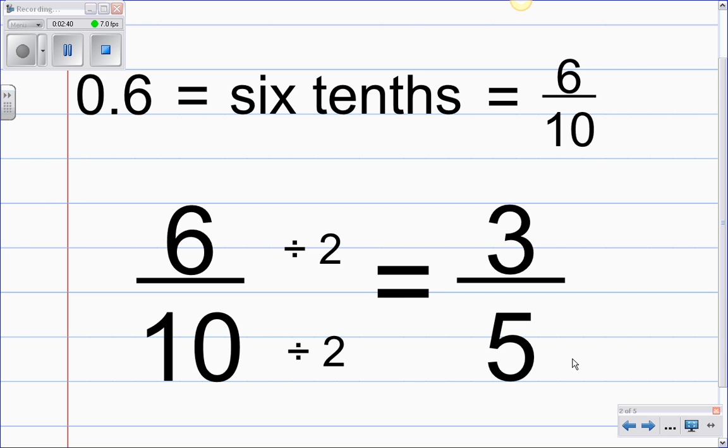So our final answer is going to be three fifths. So as a recap, 0.6 when we say it in word form for decimals it's six tenths which is the same thing as 6 over 10 or six tenths when we look at the fraction form. However, we cannot leave the six tenths in that higher fraction because it can be reduced. So after we reduce the six tenths by dividing by 2 we end up with a final answer of 3 over 5 or three fifths.